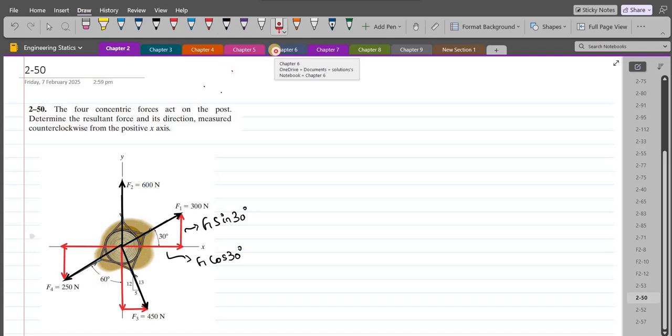For the vertical and horizontal components of the F3 force, we have to consider this 5-12-13 triangle. So the vertical component is F3 times the ratio of adjacent, which is 12, over the hypotenuse, which is 13.